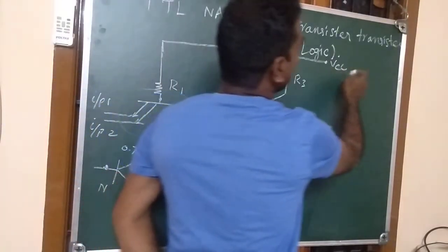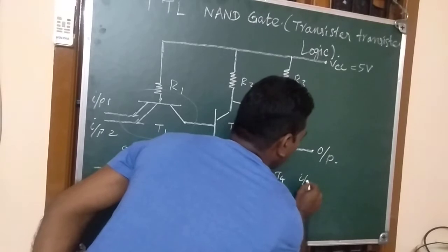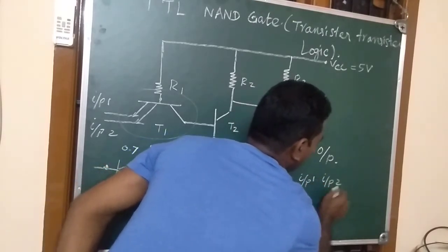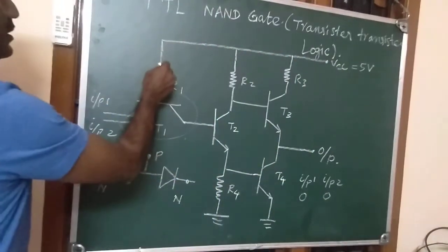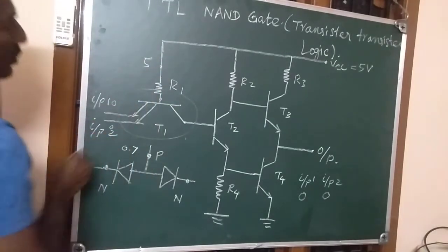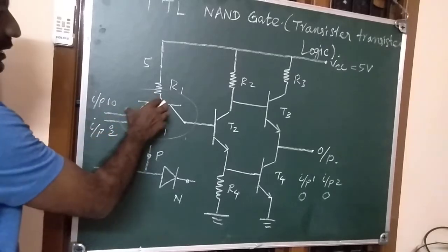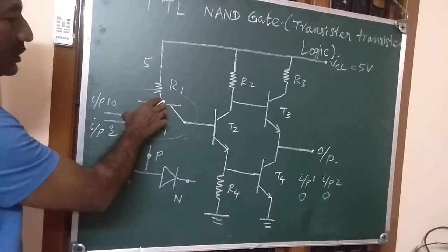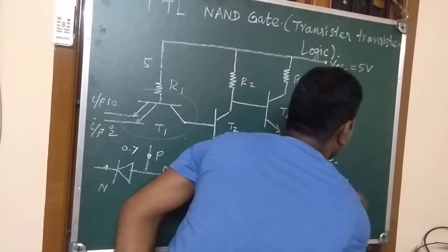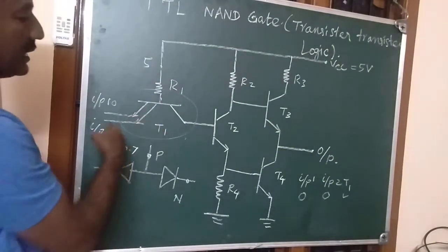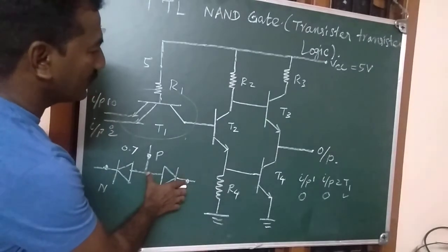Now, it is connected to VCC — let us assume it is 5 volts. Consider the case where input 1 is 0 and input 2 is also 0. We are applying 5 volts at VCC, and both inputs are at 0 volts. For this 0,0 case, the transistor T1 will conduct because there is a potential difference of 5 volts, switching on the diode. Since T1 is conducting, we get only 0.7 volts at its output, which is not enough to turn on T2.